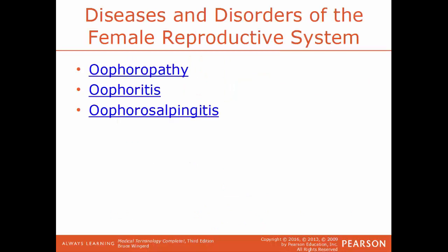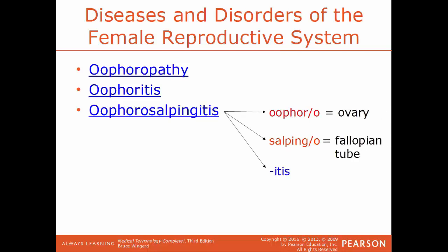Oophoropathy is a general term referencing any disease of the ovary. Oophoritis is the inflammation of the ovaries. Oophorosalpingitis: oophoro is an ovary, salpingo is a fallopian tube, and itis is the inflammation of — so this condition is the inflammation of the ovaries and the fallopian tubes.